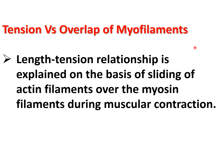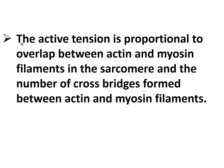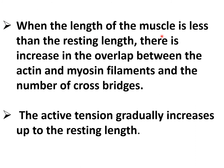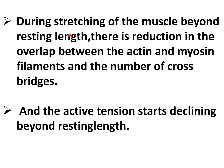Tension versus overlap of myofilaments: the length-tension relationship is explained on the basis of sliding of actin filaments over myosin filaments during muscular contraction. The active tension is proportional to the overlap between actin and myosin filaments in the sarcomere. When the length of the muscle is less than the resting length, there is an increase in overlap between actin and myosin filaments and in the number of cross bridges, so active tension gradually increases up to resting length. During stretching of the muscle beyond resting length, there is a reduction in overlap and number of cross bridges, and active tension starts declining.